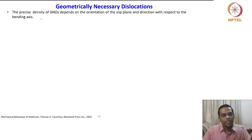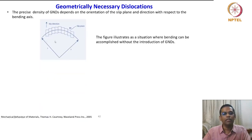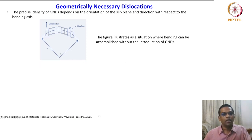The precise density of GNDs depends on the orientation of the slip plane and the direction with respect to the bending axis. This is another important idea about GNDs. The figure illustrates a situation where bending can be accomplished without the introduction of GNDs.